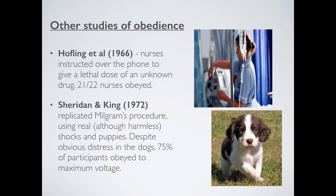Another study, slightly more sinister. Sheridan and King in the 1970s did Milgram's experiment, but this time with real electricity — much lower voltage, ultimately harmless but still quite painful — and instead of using people, they used tiny little puppy dogs. The dogs were yelping and howling with pain, but despite this, three quarters of participants went all the way to the end. This is usually the study that most people think is absolutely appalling and say 'I would never do that.' But in fact, three out of four people would — which is absolutely incredible.